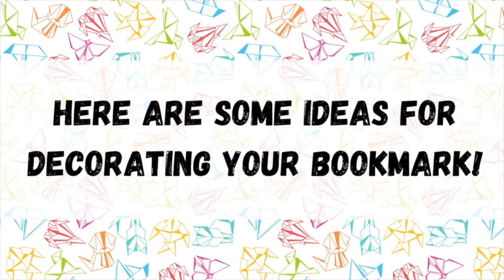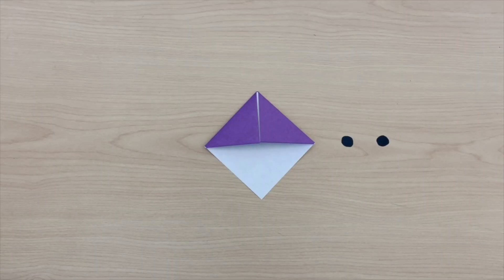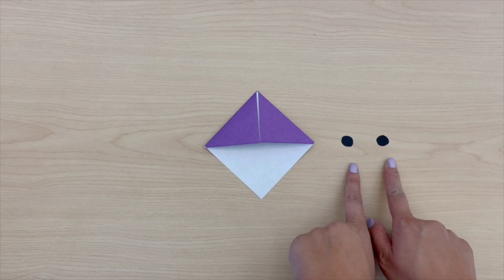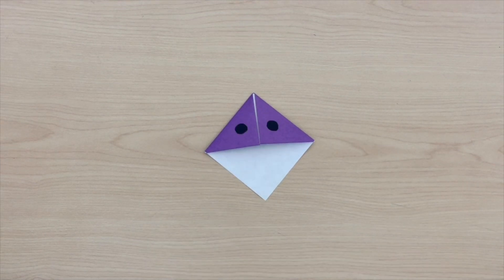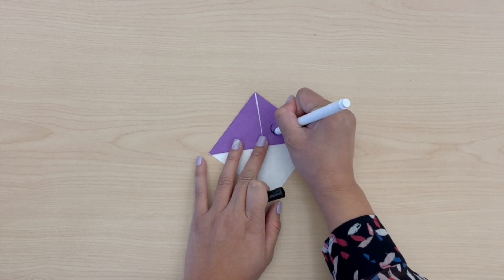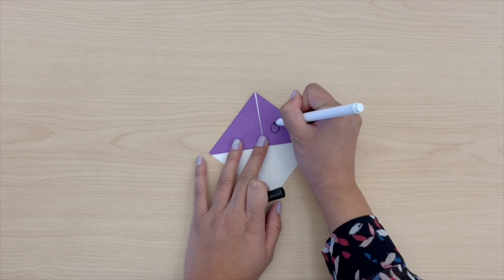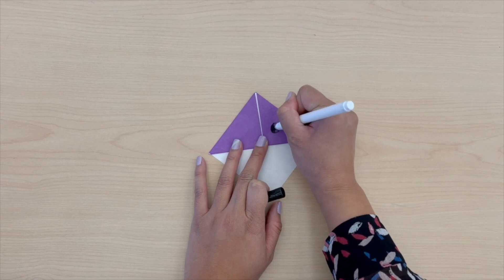Here are some ideas for decorating your bookmark. To make eyes for your bookmark, you can cut out circles and paste them on. Or you can just draw them on with a marker. You can get creative and draw any kind of eyes you like.